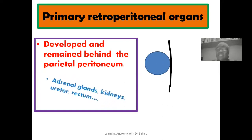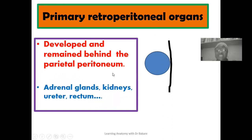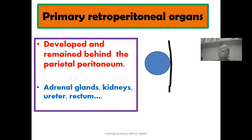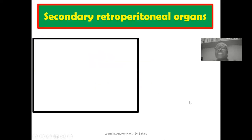Examples of primary retroperitoneal organs include the adrenal glands, the kidneys, the ureters, and also the rectum. These organs are seen to present a primary retroperitoneal presentation.